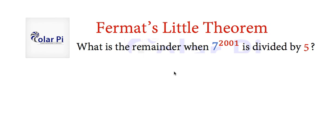Now, I typed 7 to the 2001 power into my TI-89 calculator, and it told me that it's infinity. So it's impractical to try and find the value of this number and then divide it by 5. But Fermat's Little Theorem is not the only approach to solving this problem. Another really good approach is looking at what happens when you divide consecutive powers of 7 by 5.